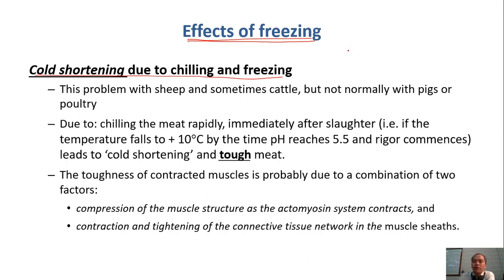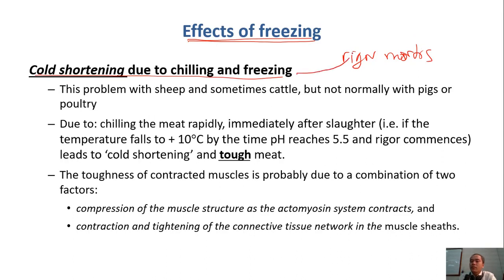Do you remember rigor mortis? This is one of the post-mortem changes we discussed. After slaughter, the muscle of the animal becomes stiffer — muscle contraction due to the formation of actomyosin. We have irreversible contraction and the muscle becomes rigid. We need a certain time for this process to occur, to release, and after that tenderization of the meat. Remember: onset of rigor, completion of rigor, resolution or release of rigor, and tenderization of the meat.